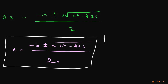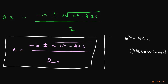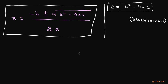The value B² minus 4AC is called the discriminant, and we usually denote it by capital D. This is the discriminant of a quadratic equation. This is all about the quadratic formula. Thank you.